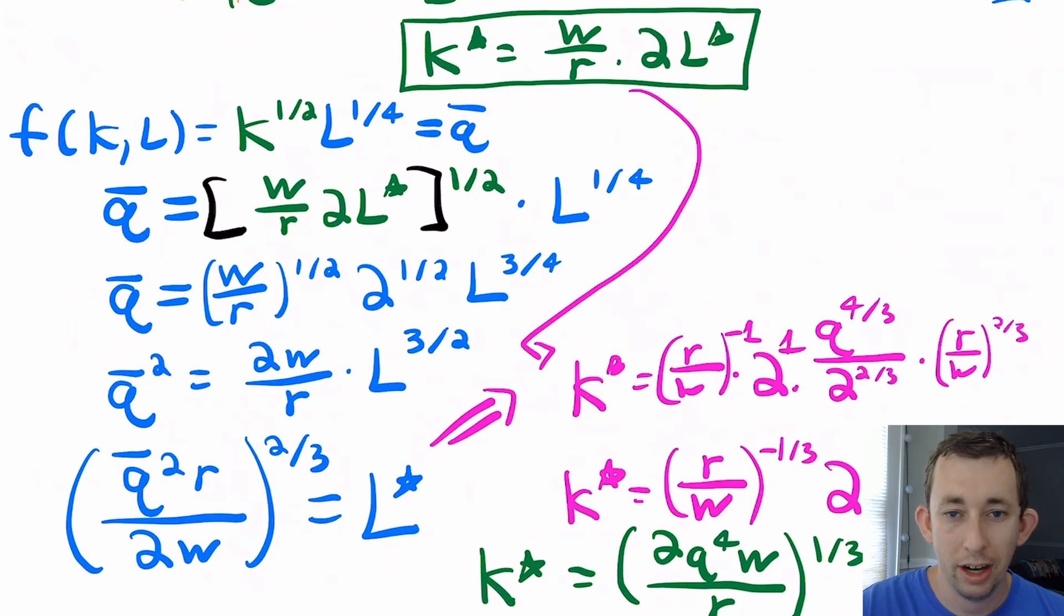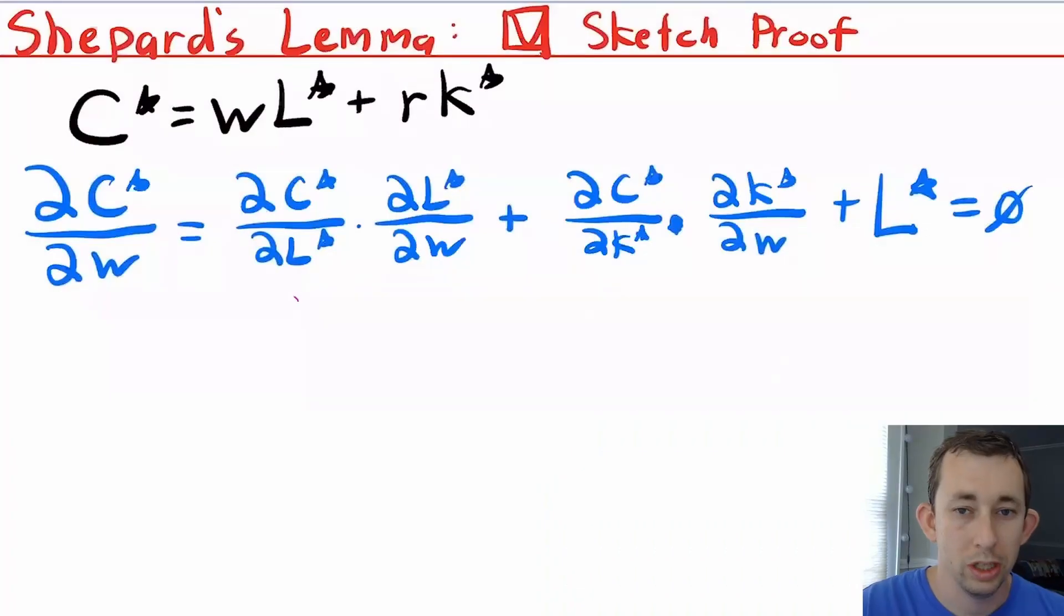What happens if you have a cost function and you want to go to conditional factor demand? There's an easy way to do that by way of the envelope theorem. The way this works for the envelope theorem is called Shepard's Lemma. Same thing as for the expenditure minimization problem, but now we're talking about production.